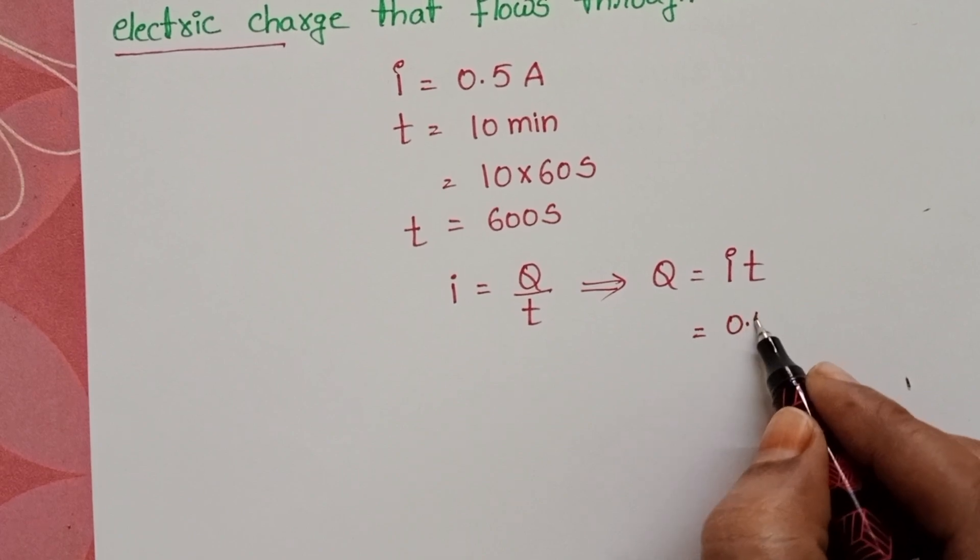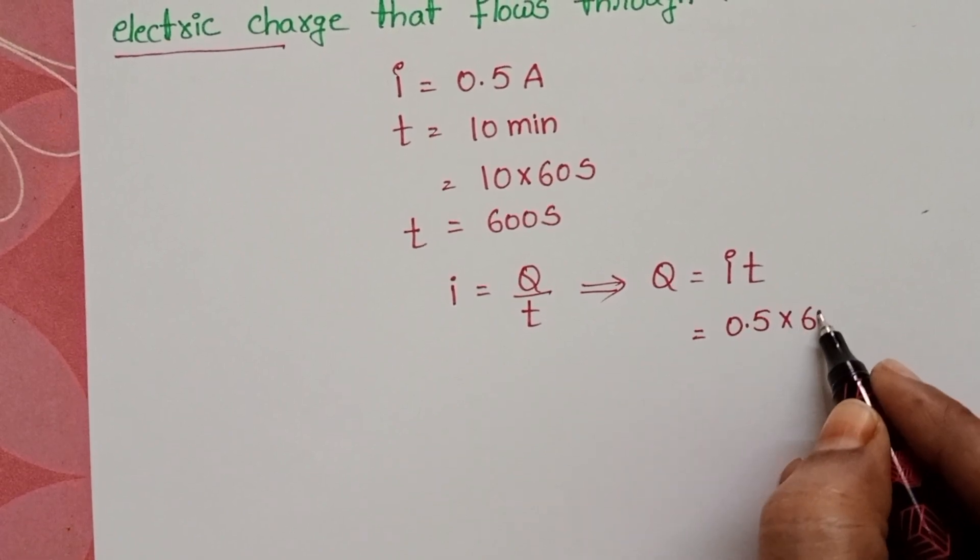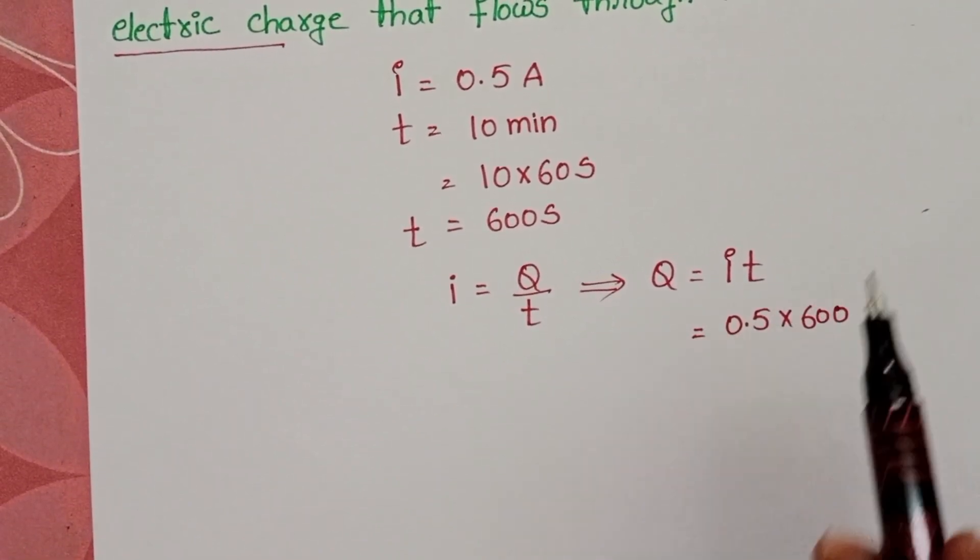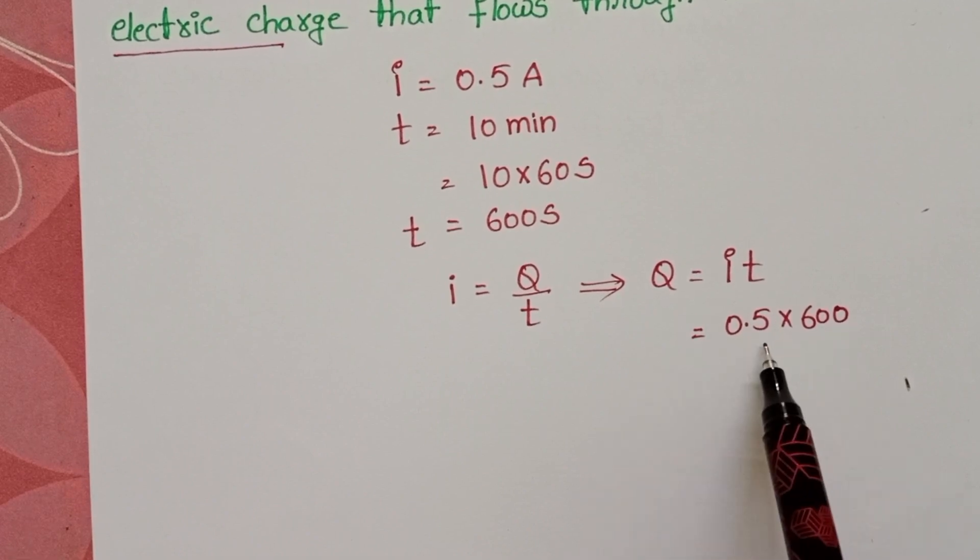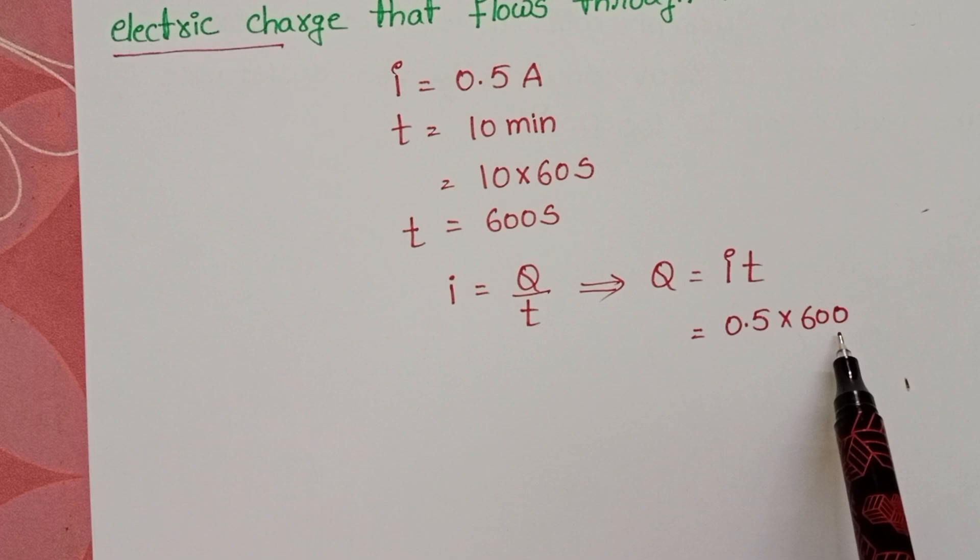I is 0.5 amperes and time is 600 seconds. You must take care that all the units are in SI system. Here electric current is in amperes and time is in seconds.